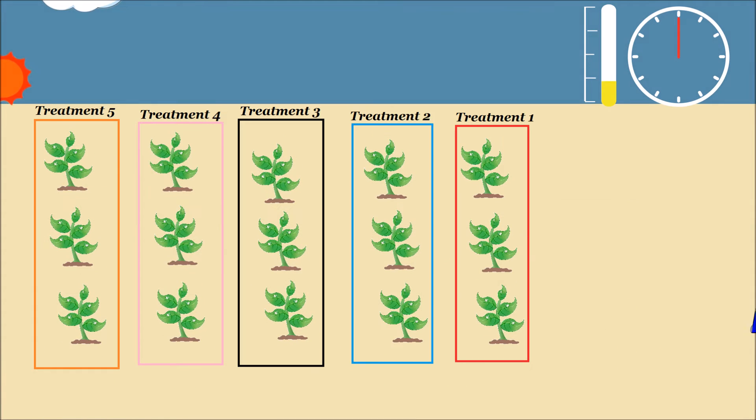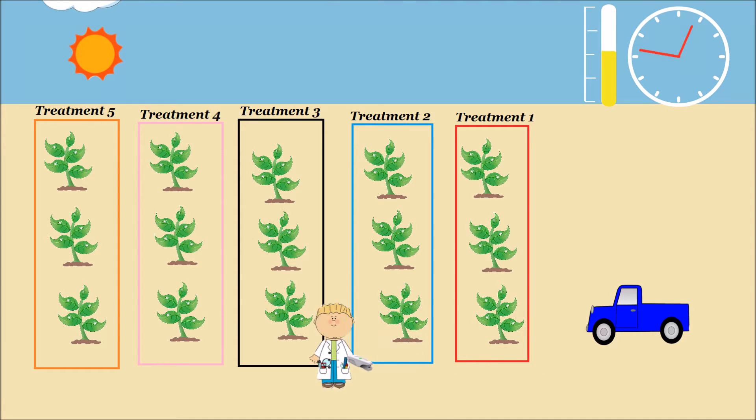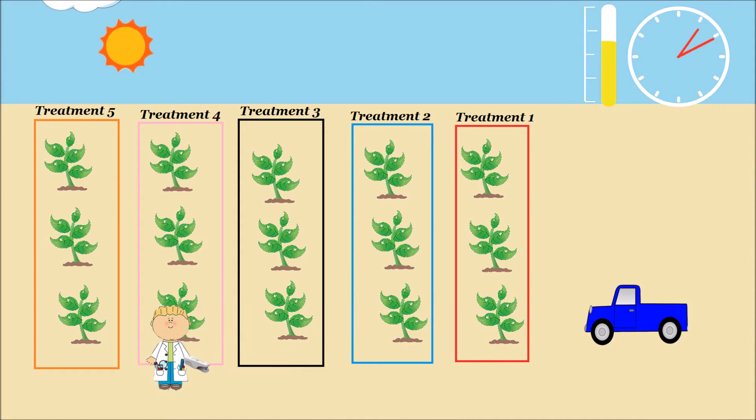In our third example, each plant row represents a different treatment. These treatments could represent different irrigation levels, fertilizer applications, soil amendments, or pesticides.